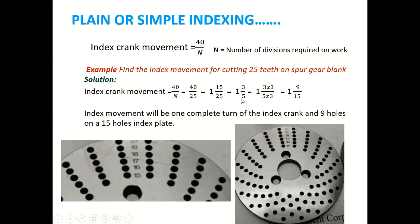But student, there is no plate having 5 holes. So for that, what do you have to do? So 3 into 3 divided by 5. Means 3 by 5 is already there. So we are multiplying by 3